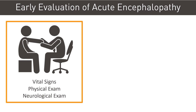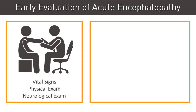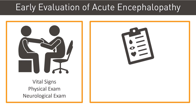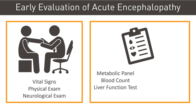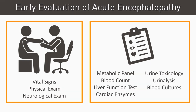Driven by history and exam, consider ordering pertinent lab tests such as comprehensive chemistry and electrolytes, complete blood count, liver function tests, cardiac enzymes, urine toxicology, urinalysis, and blood cultures. Thyroid function, ammonia, thiamine, and vitamin B12 levels may also be measured on a case-by-case basis.